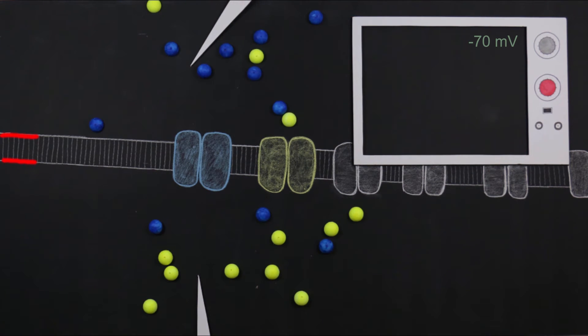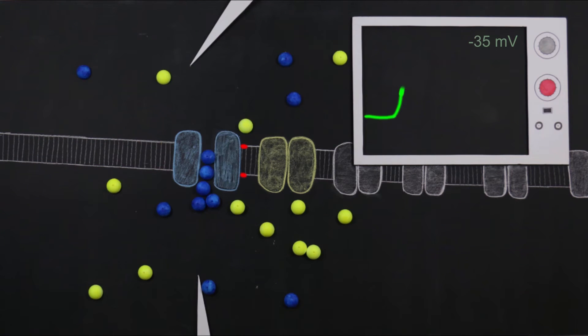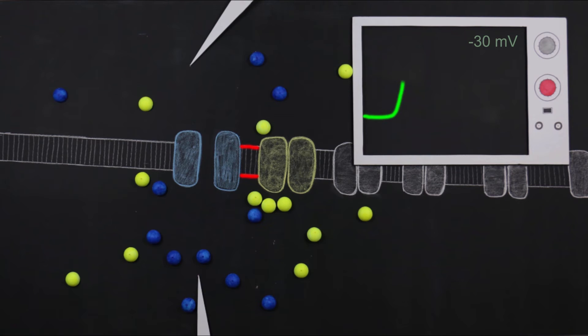First, at that point in time when the threshold of excitation is surpassed, the sodium channels open and sodium ions rush into the cell through the membrane of the axon initial segment. This is the beginning of the rising phase of the action potential.